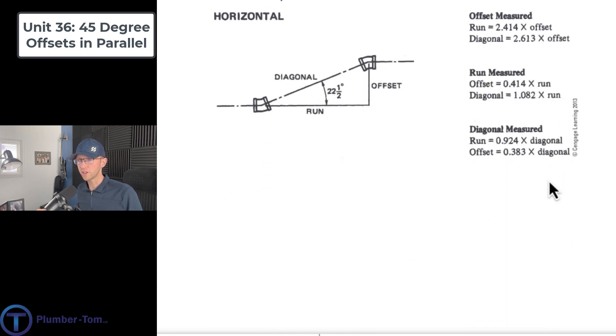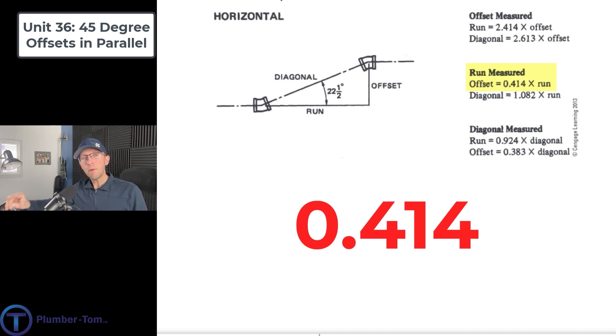Let's go to the horizontal version here. And please note once again, that if we have the run, we can find the offset by multiplying by 0.414. 0.414. You're working on this, right? You're blocking that in your mind. You're going to remember this for as long as you're a plumber. Just like you know 1.414, you know how to subtract this difference or add this difference by using 0.414.